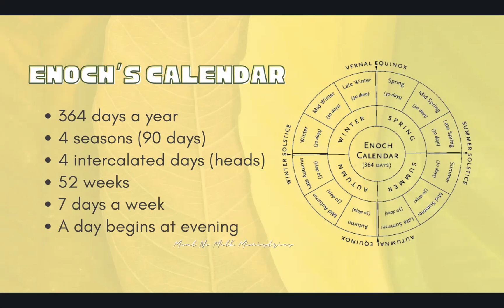I myself and several others reckon the calendar using Enoch's calendar — some will call this the Enochian calendar — found in the book of Enoch. This calendar reckons time using 364 days in a year, four seasons, three months in a season equaling 90 days, including four intercalated days or heads of the month, 52 weeks, and seven days a week. A day begins at evening, and a day is 24 hours.